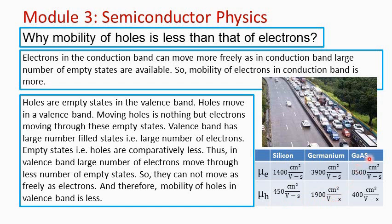Similarly, for gallium arsenide, mobility of electrons is 8500 centimeter square per volt second and mobility of holes is 400 centimeter square per volt second. So in all these cases, mobility of holes is less than mobility of electrons.